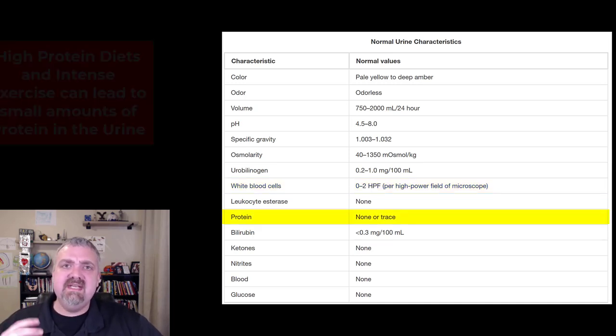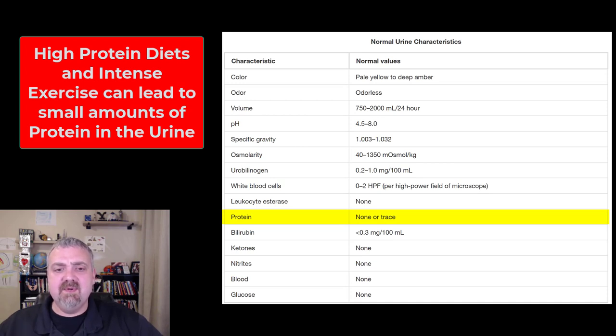Proteins, there shouldn't be any protein. A really high protein meal can maybe cause some protein to be in your urine, but if you see protein in the urine, the biggest concern is that the glomerulus, the filter at the beginning of each nephron is damaged and allowing proteins to leak through. Proteins are too large, they shouldn't normally leak through. I've also seen intense exercise can cause some leakage of protein to the urine. So there's a little bit of protein in the urine, and someone's eating a high protein diet and they just got done exercising. I'm not as concerned about it, but protein in the urine should make you think some level of kidney damage.